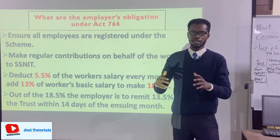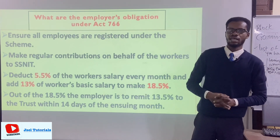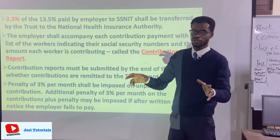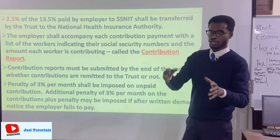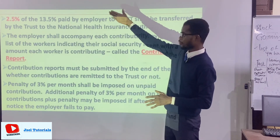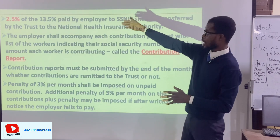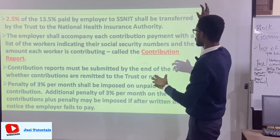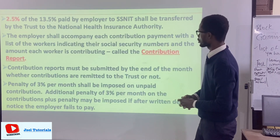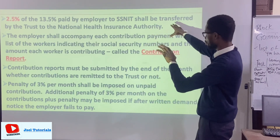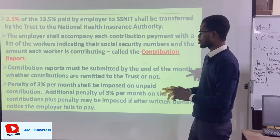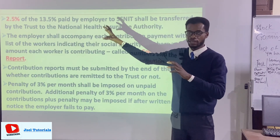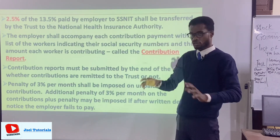The employer must also be aware that out of the 13.5% remitted to SSNIT, 2.5% goes into the National Health Insurance. That percentage is deducted by SSNIT and directed to the National Health Insurance Authority when the money reaches them.